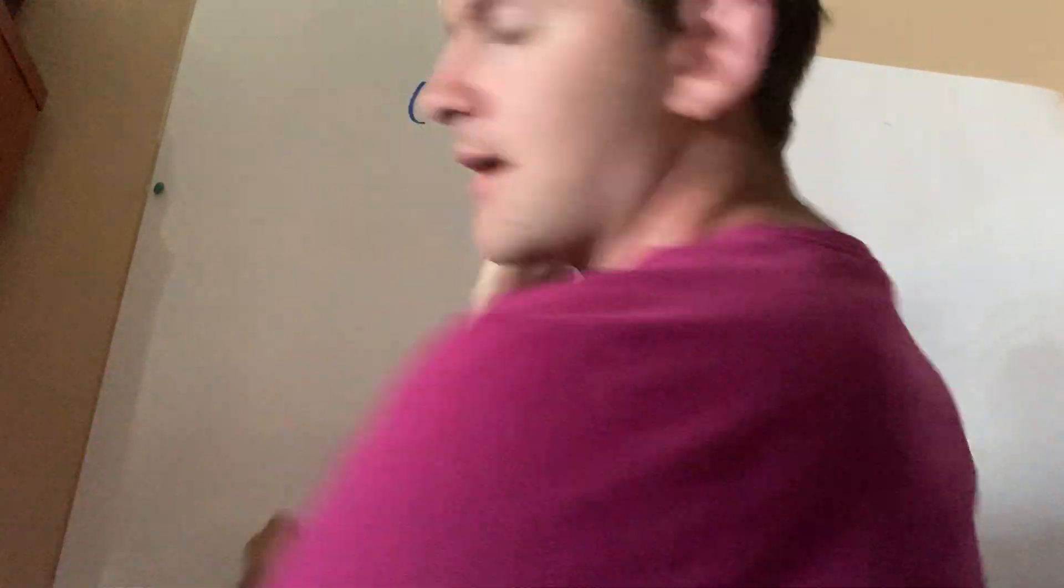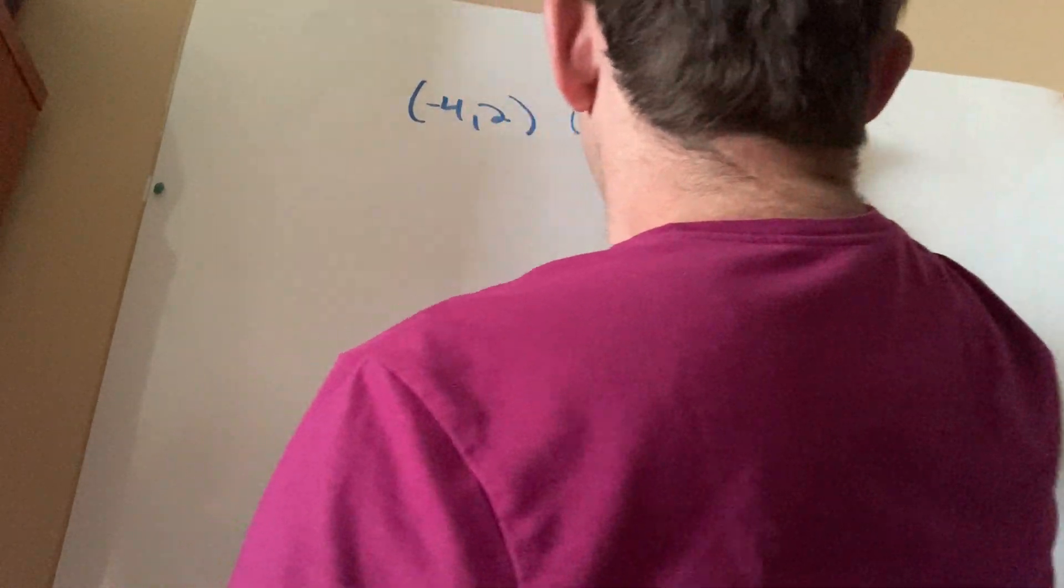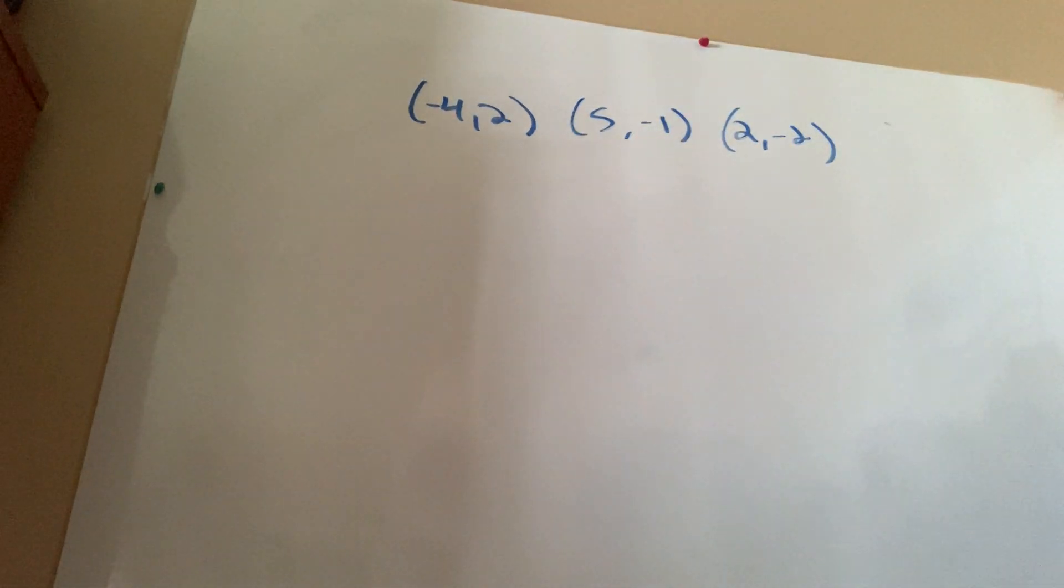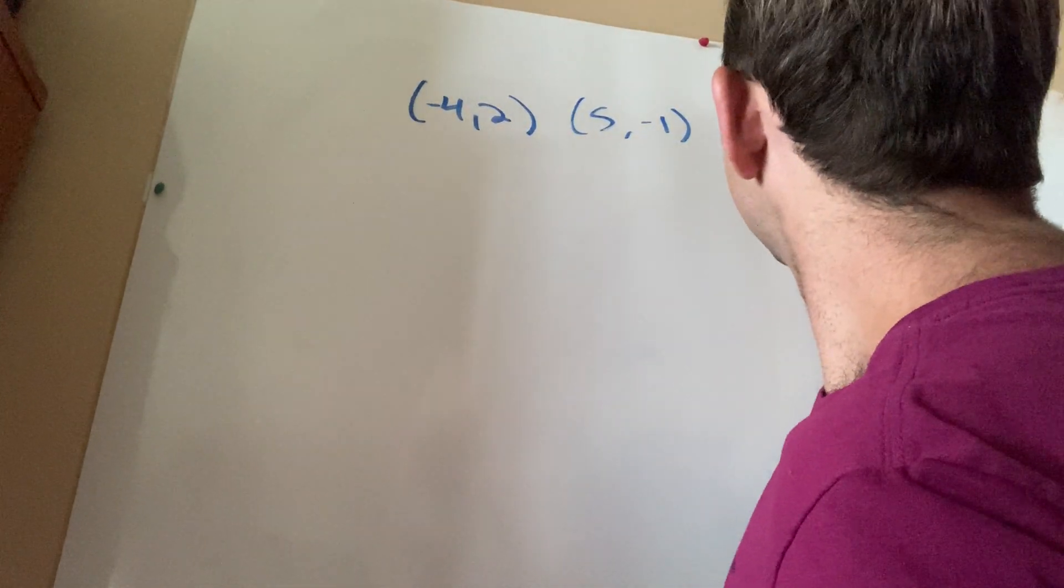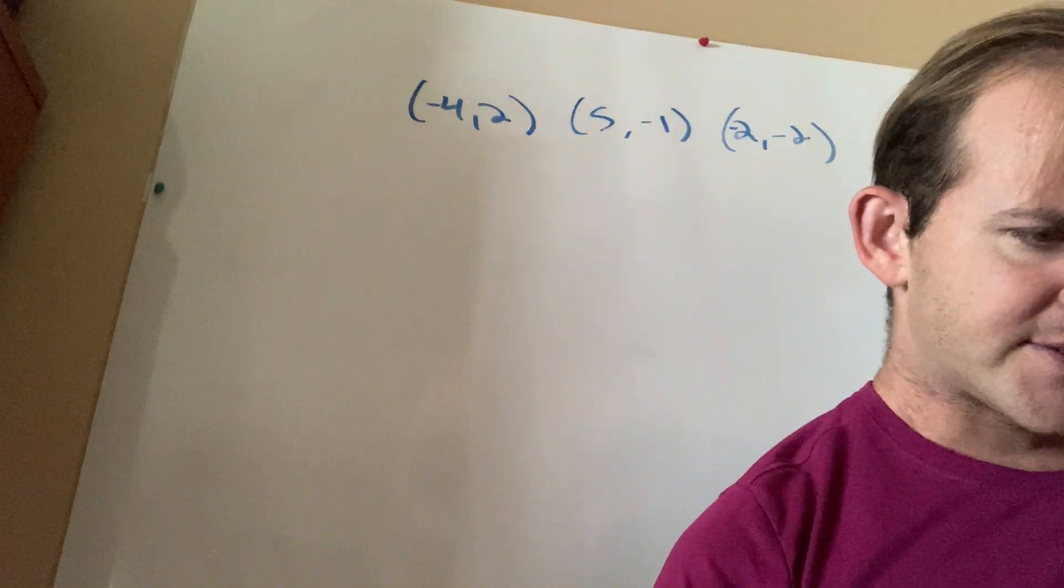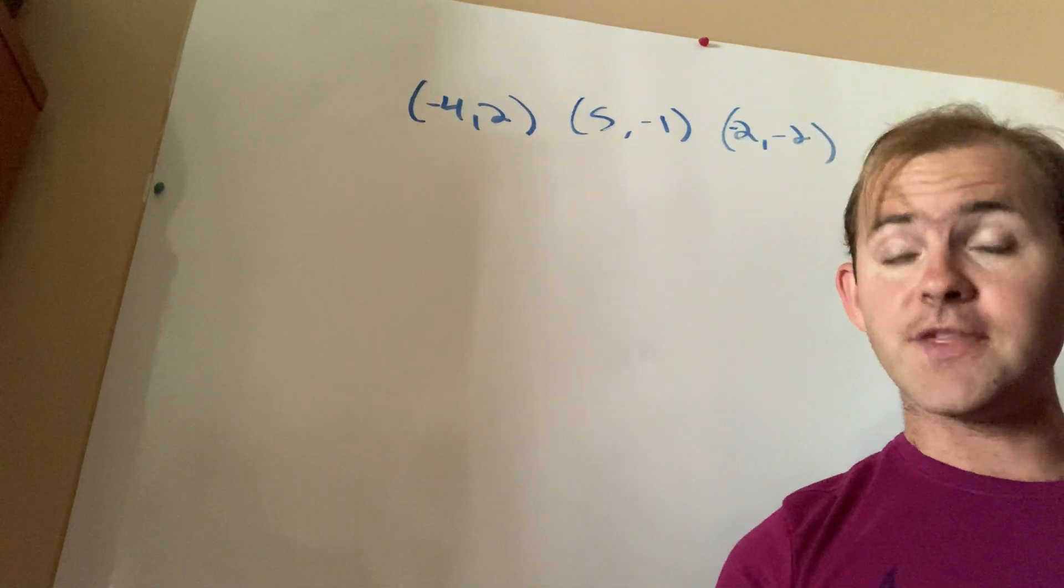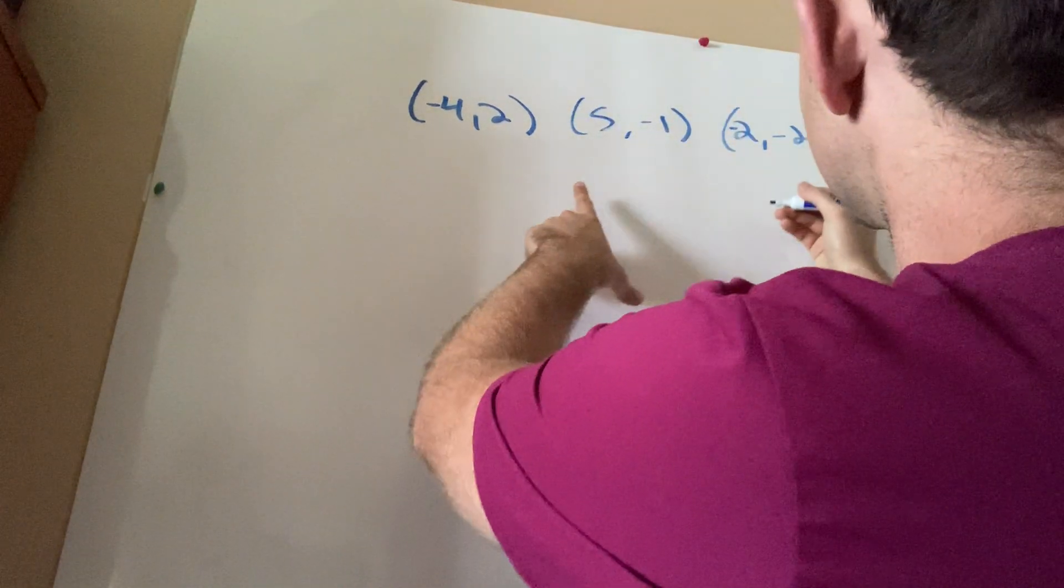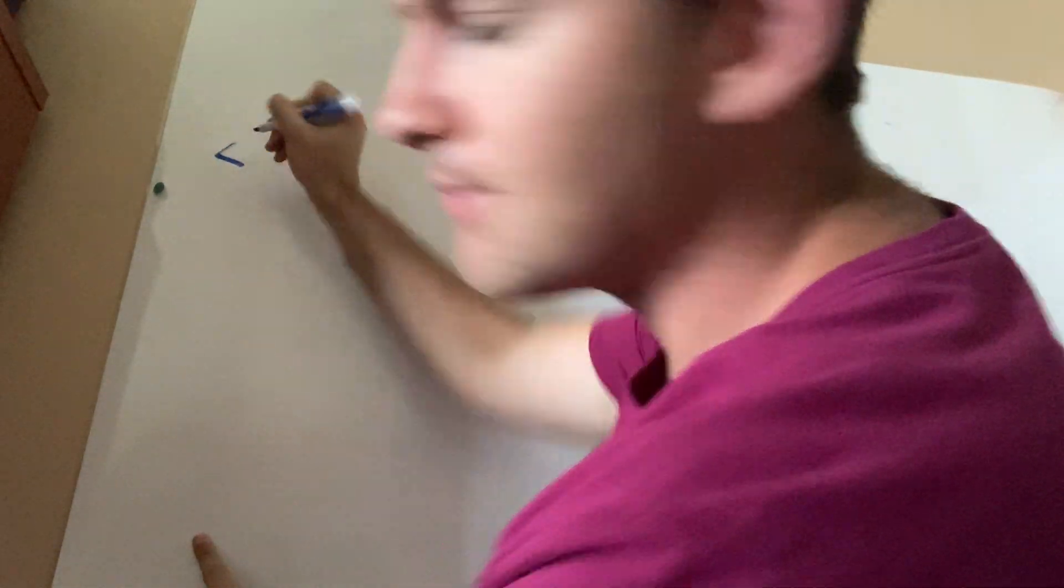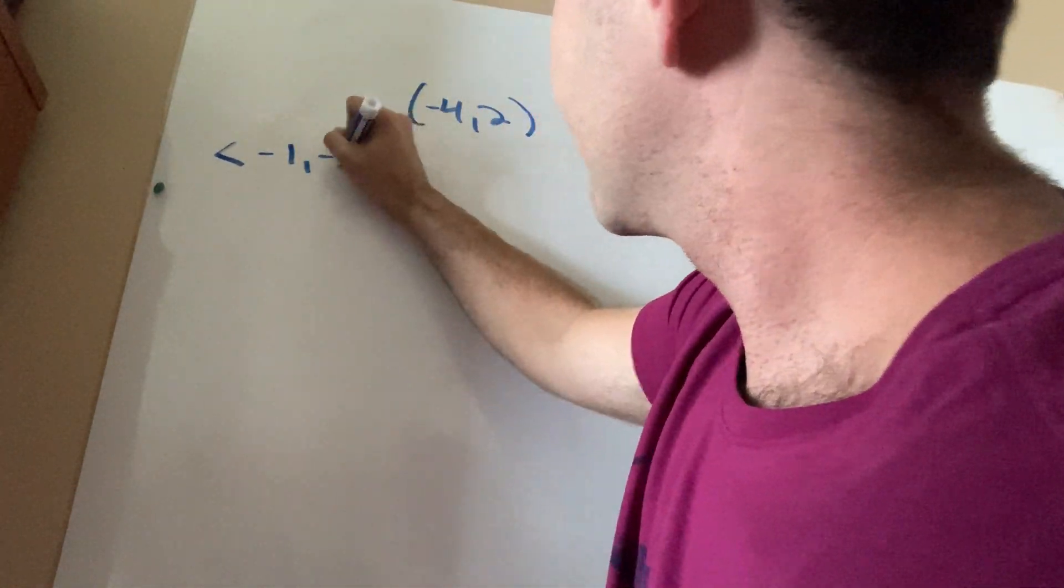Let's take a look at question 11. They give you three coordinates here: negative 4 comma 2, 5 comma negative 1, and 2 comma negative 2. I apologize. Now, they also give me a vector, and they're asking me to graph and label the figure under this particular transformation. So let's write this vector out. This vector is given by negative 1, negative 5.